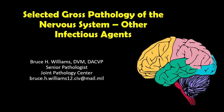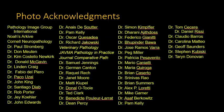Hello, it's Bruce Williams again. Today I want to present part five of my series on the selected gross pathology of the nervous system. We've already had a full lecture on viral agents and another on bacterial agents. In this lecture I want to cover the rest of the infectious agents that might find their way into the central nervous system. I want to thank those friends and colleagues who have provided me these great images over the years.